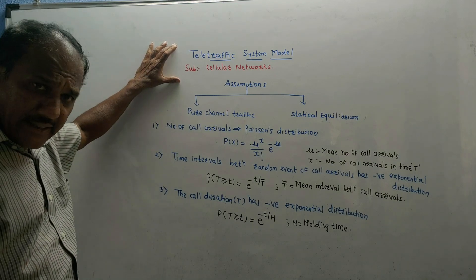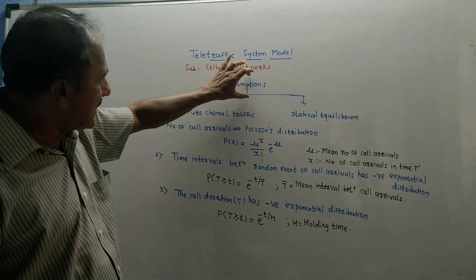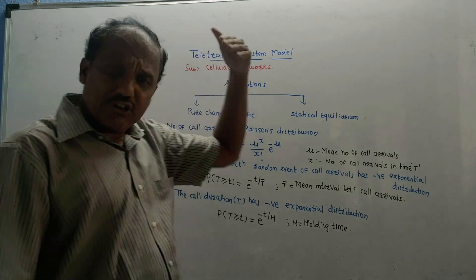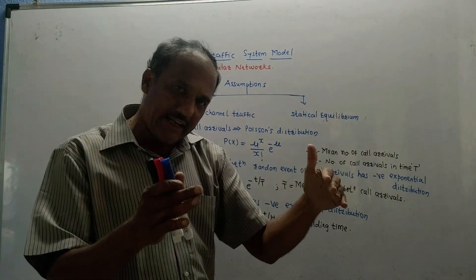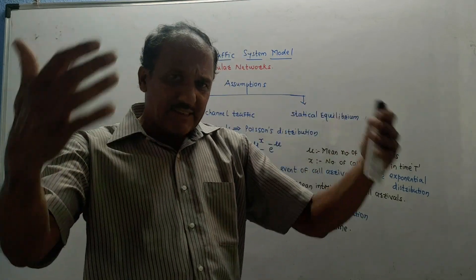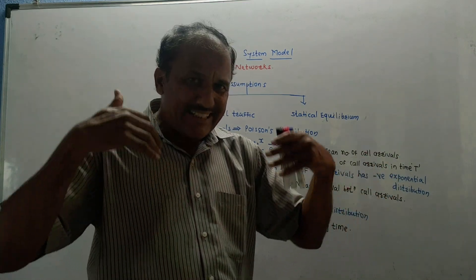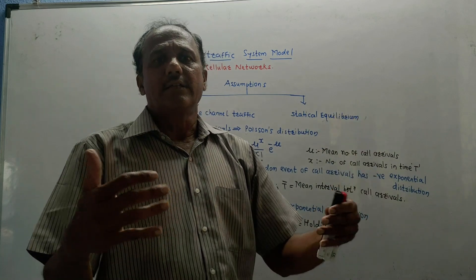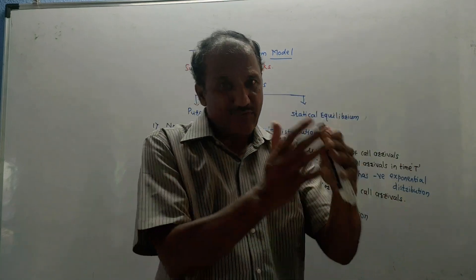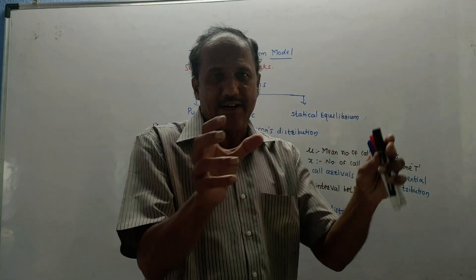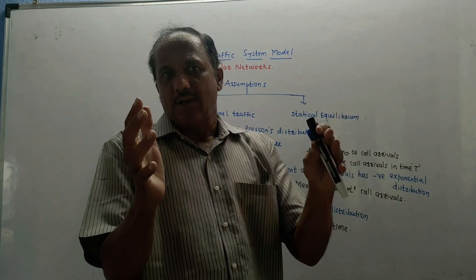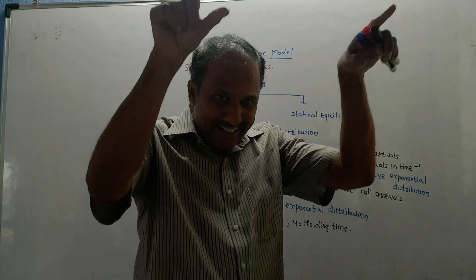The key question related to this topic from the exam point of view is: what are the assumptions required for Teletraffic System Model? There are actually two assumptions. In the last video I explained what is the meaning of teletraffic — it is related to the traffic of cell phones. These mathematical models are required because whenever there is congestion or excess tele-traffic, there are chances of call drops as well as calls being put on hold. To analyze this, we first need to calculate what is the busy hour — the time when traffic is maximum and all channels are busy.